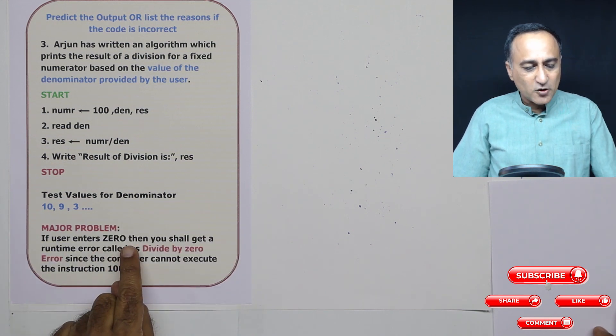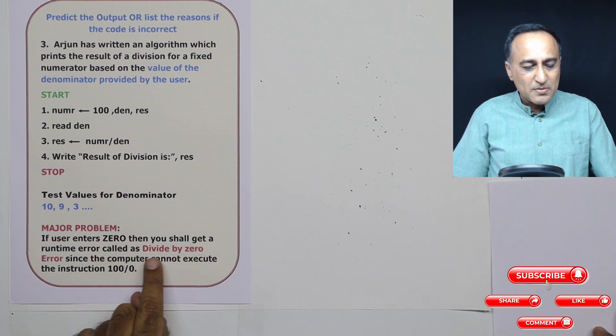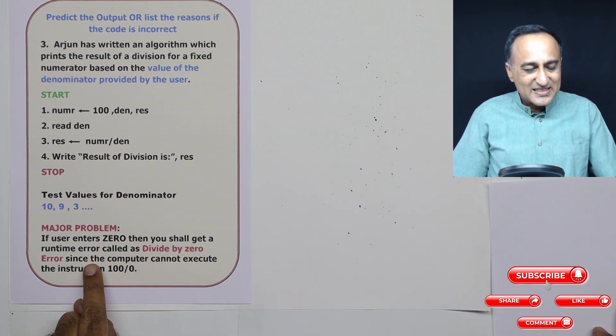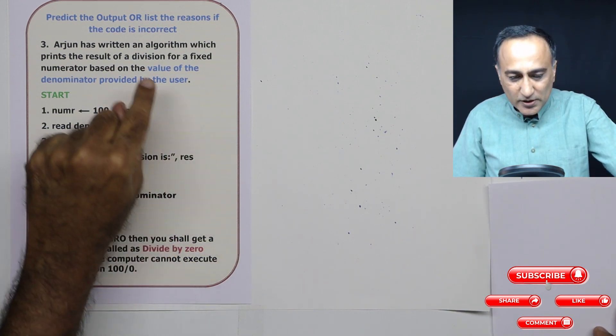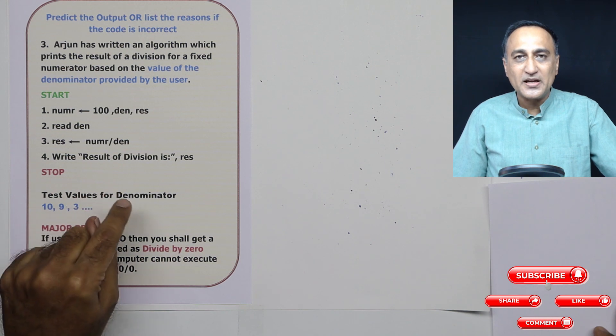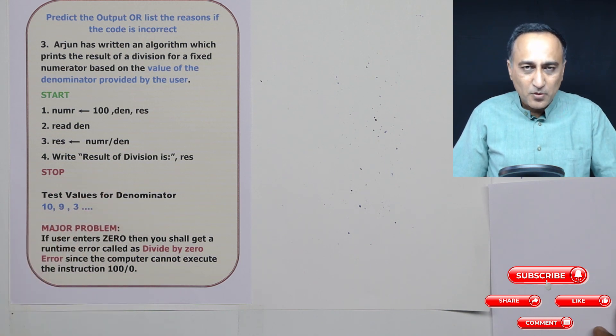You cannot give ambiguous instructions which have no solution. This will give you a divide by zero error. If a user enters zero, you shall get a runtime error called divide by zero, since the computer cannot execute the instruction 100 by zero.